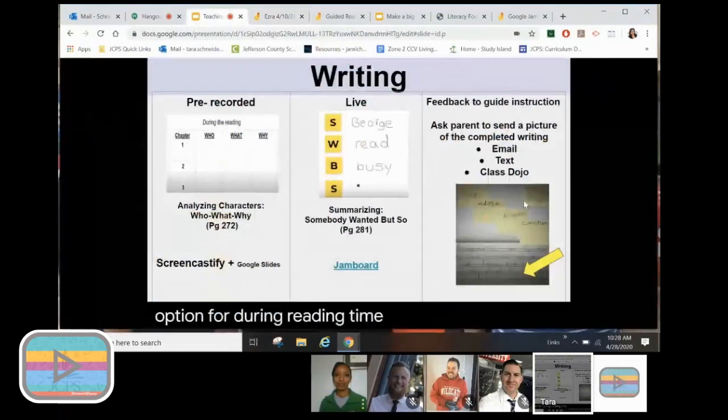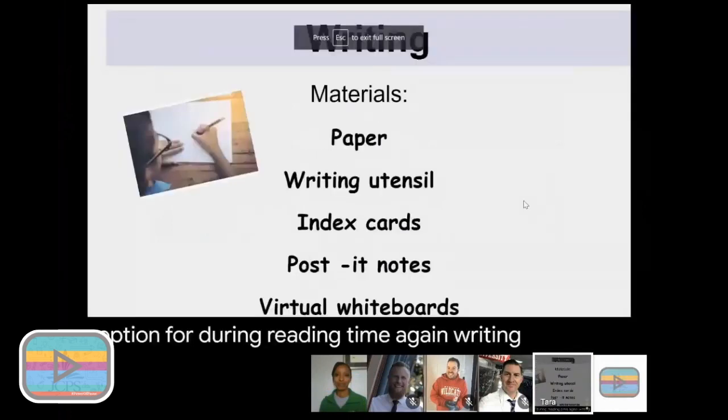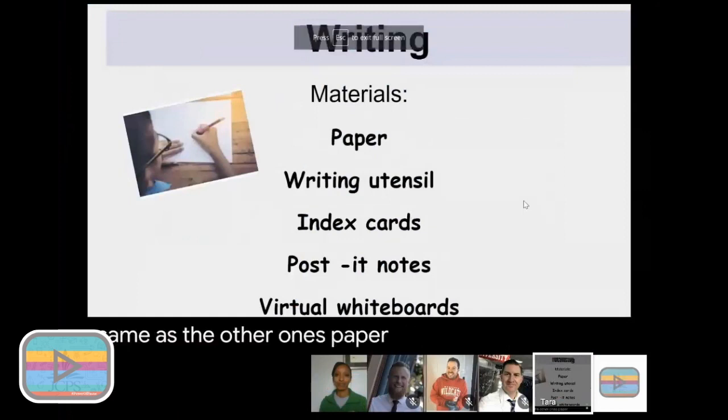And if you have some relationships with your parents, you can have the parent maybe send a completed writing to you via email or a text message or class dojo just so that you can give them some feedback on the writing. Again, writing materials, same as the other ones: paper, writing utensil, index cards, post-it notes, virtual whiteboards, anything you can get your hands on for writing.